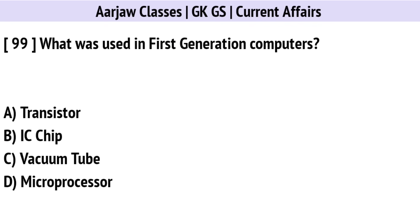What was used in first generation computers? The correct option is C: Vacuum Tube.